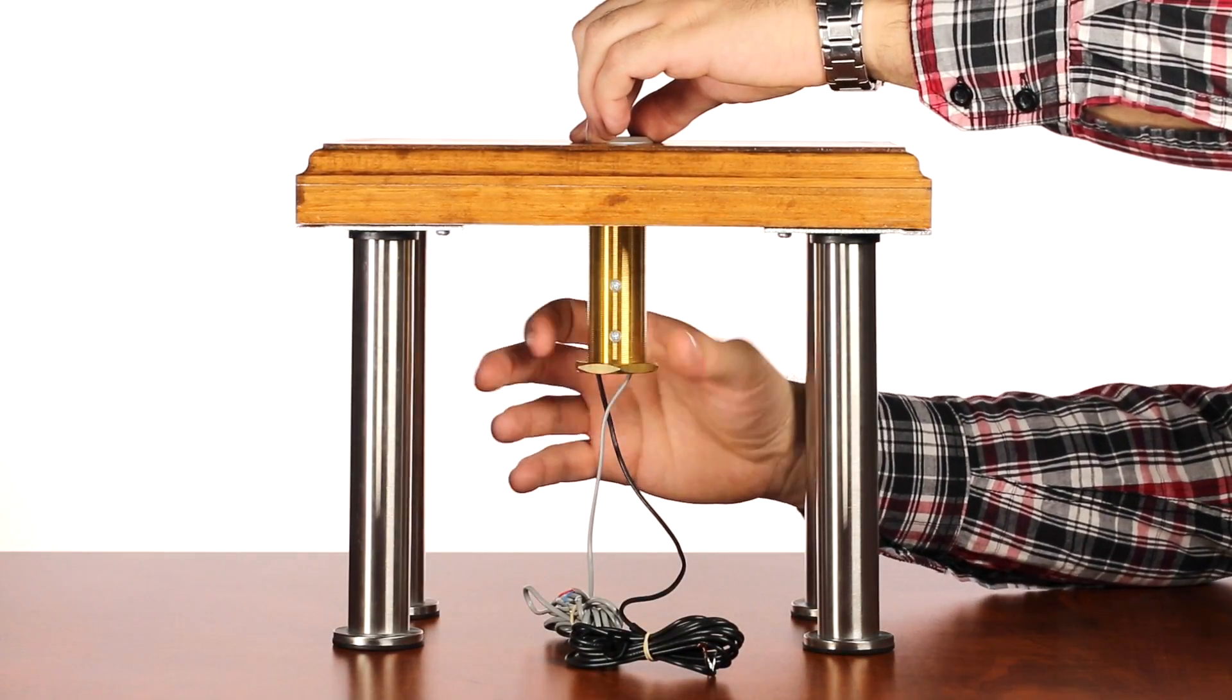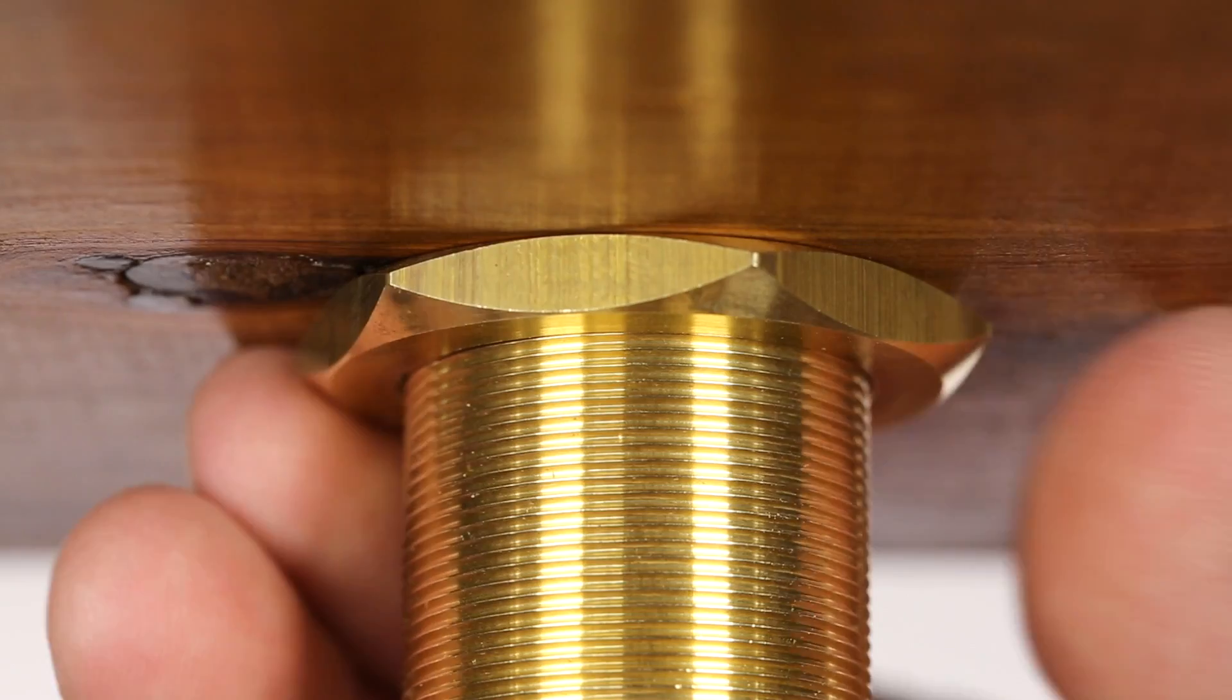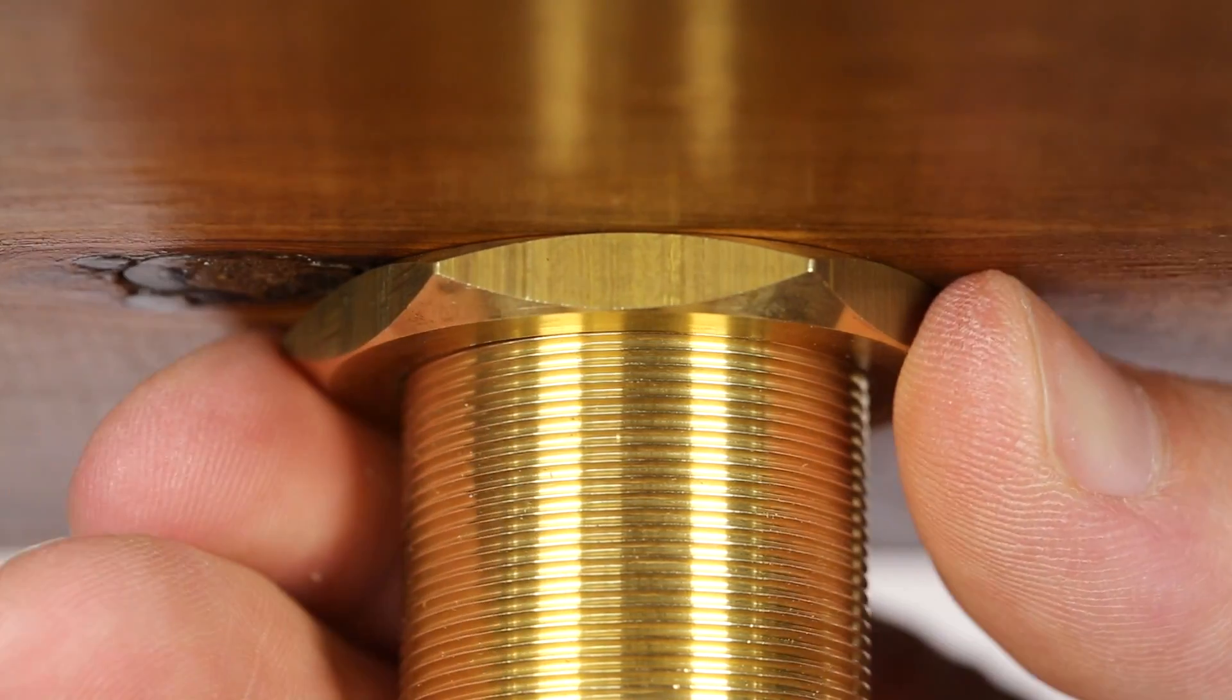Screw the brass nut all the way to the top of the shaft, hand tightening securing the microphone to the table.